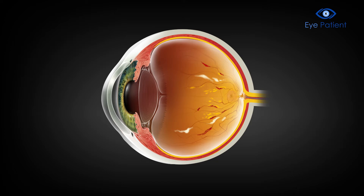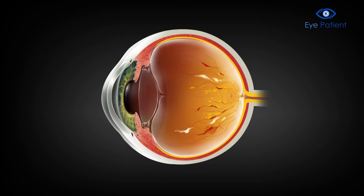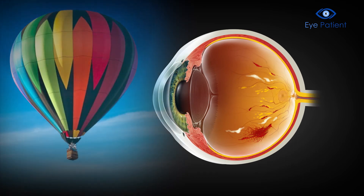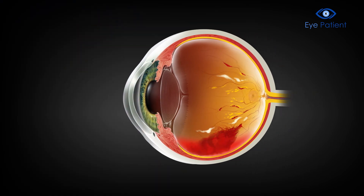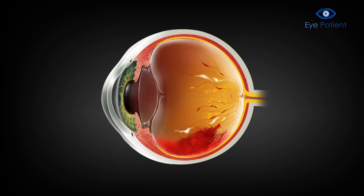In this condition, the retina's blood vessels are damaged and new, fragile ones grow. These new vessels can block vision when they leak blood into the vitreous, the gel-like substance that fills the eye. Scar tissue can develop from the new blood vessels and can cause the retina to pull away from its normal position.